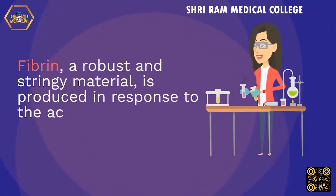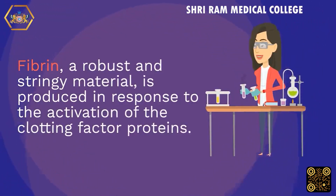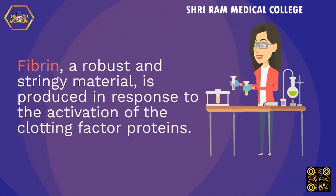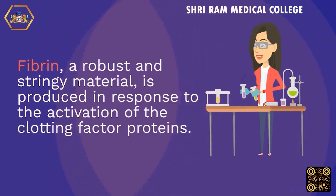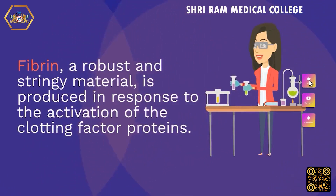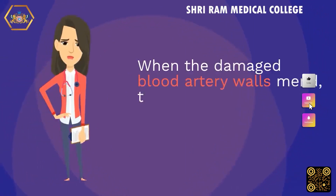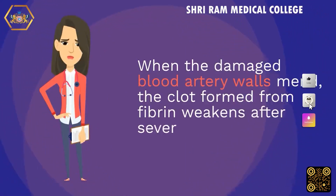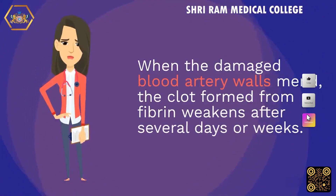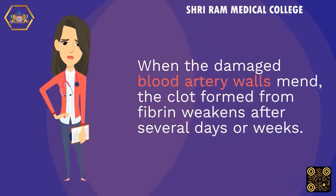Fibrin, a robust and stringy material, is produced in response to the activation of the clotting factor proteins. When the damaged blood artery walls mend, the clot formed from fibrin weakens after several days or weeks.